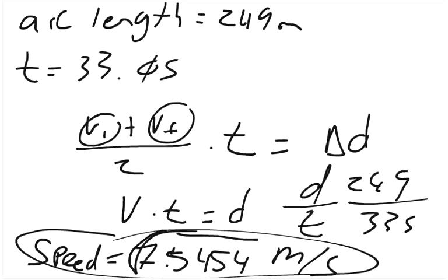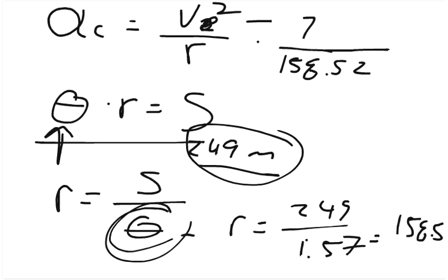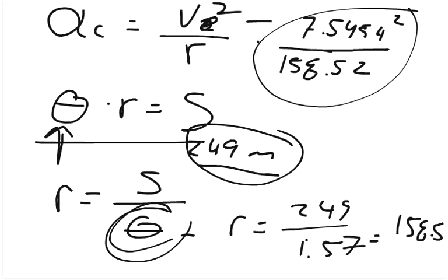And the velocity, if you remember, was 7.5454. So 7.5454 squared. And when you divide that by 158, you get that the centripetal acceleration equals approximately 0.359 meters per second squared.